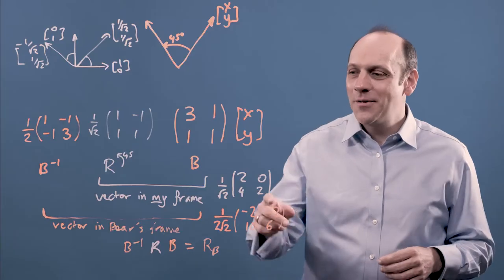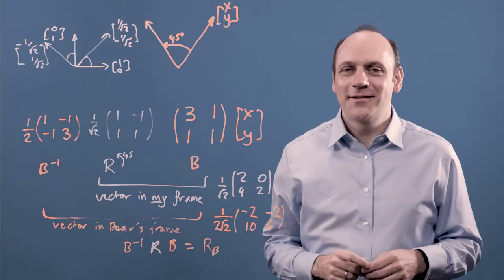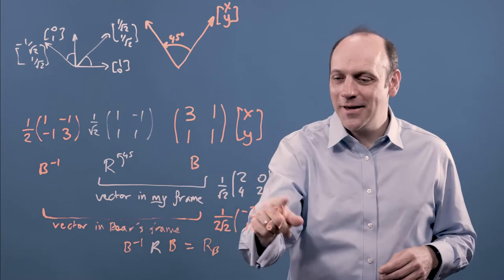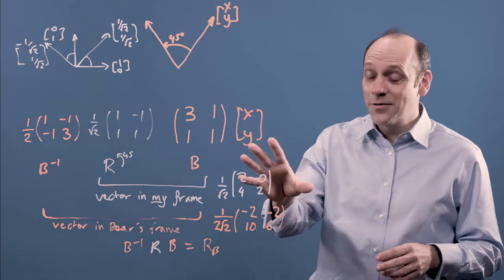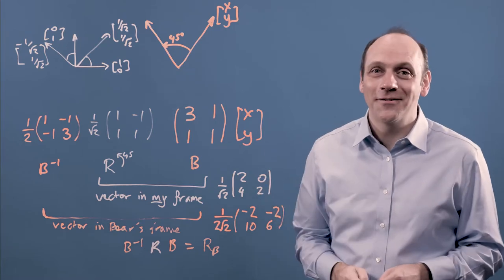So now all we have to do is do the sums. And when we do that, RB gives us this. And B to the minus 1 RB gives us this. I've written them down there. So pause and ponder if you want to verify those on your own.